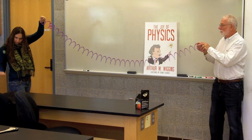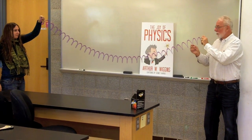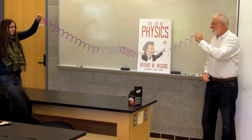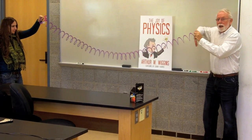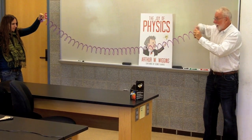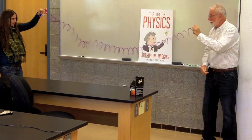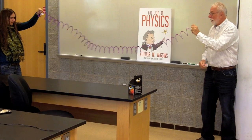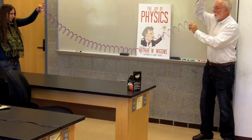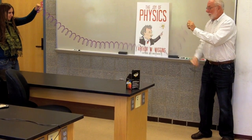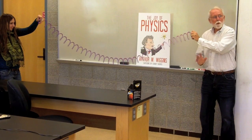Now these waves are of different kinds. This wave is called a transverse wave. You see how the wave is actually going — the spring is going like this, but the wave is going that way. Transverse. You can do that either with up and down, or every which way, it doesn't matter. Transverse.